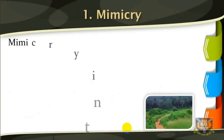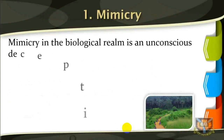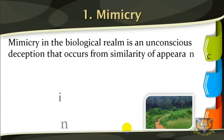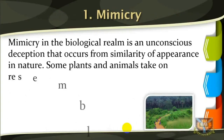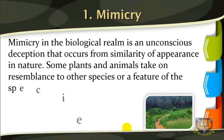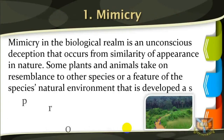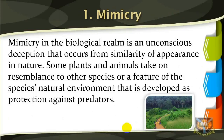Mimicry in the biological realm is an unconscious deception that occurs from similarity of appearance in nature. Some plants and animals take on resemblance to other species or a feature of the species' natural environment, developed as protection against predators. Animals may deceive predators and prey through visual deception, auditory deception, or other means.